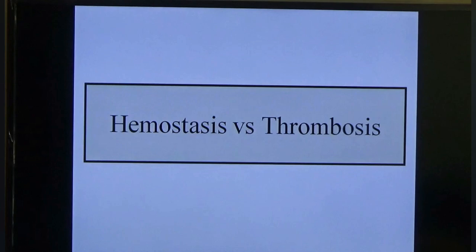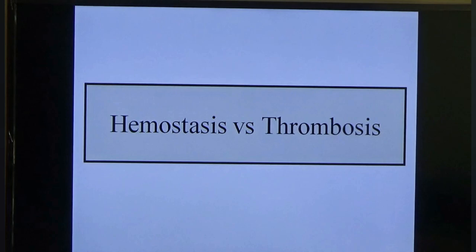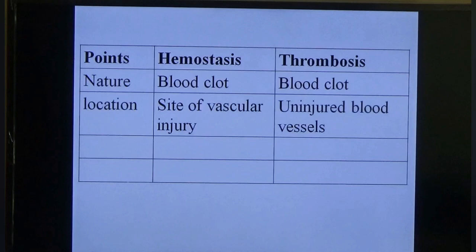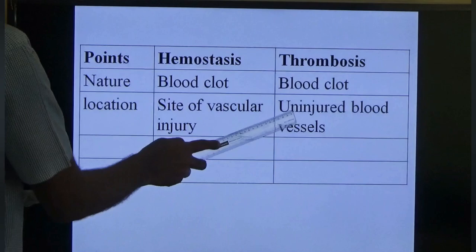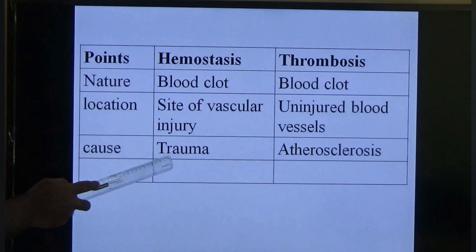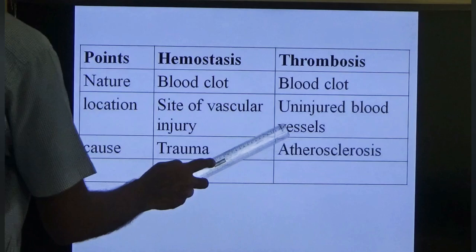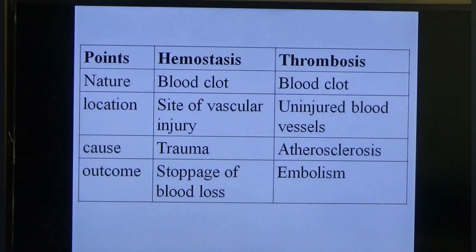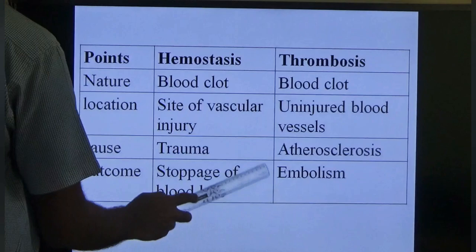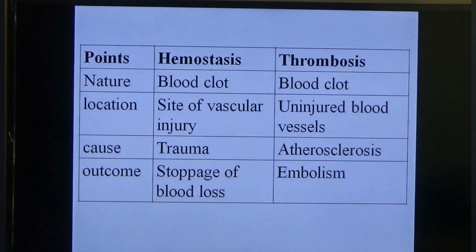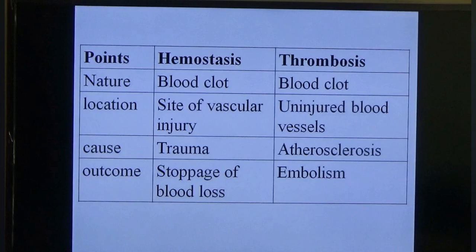Difference between hemostasis and thrombosis: by nature, both are blood clots. Location — hemostasis occurs at the site of vascular injury; thrombosis occurs in uninjured blood vessels. Cause — hemostasis is caused by trauma/injury; thrombosis is caused by atherosclerosis and related pathological conditions like myocardial infarction. Outcome — hemostasis results in stoppage of blood loss; thrombosis results in embolism.